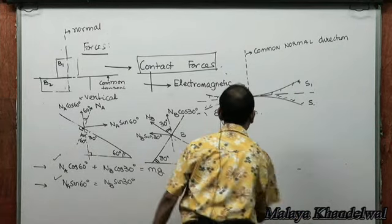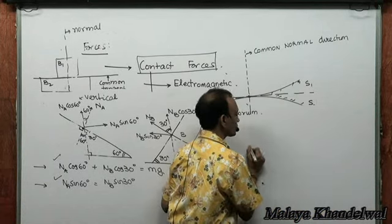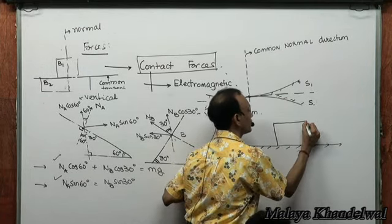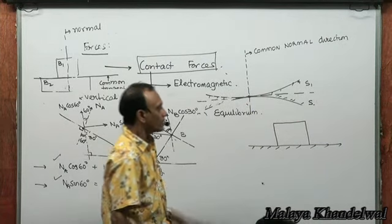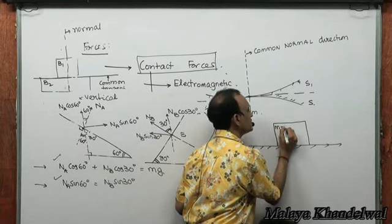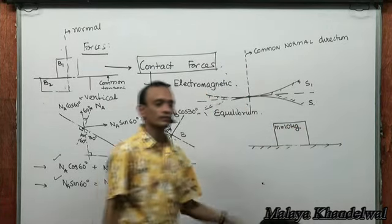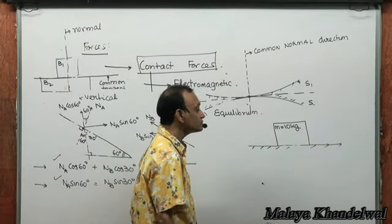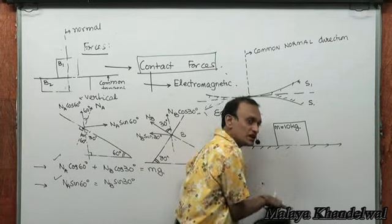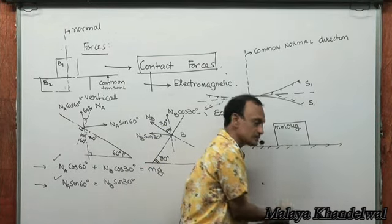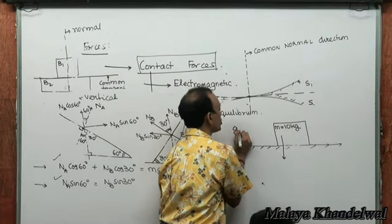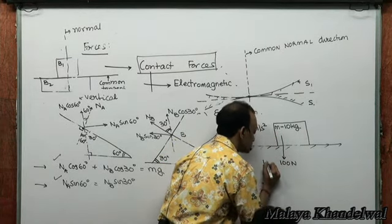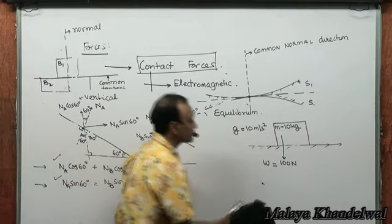Consider a simpler situation: a mass of 10 kg resting on a fixed horizontal ground. Mother Earth exerts weight downwards — MG equals 100 newtons (taking g = 10 m/s²). The ground exerts on the body a normal reaction R upwards, perpendicular to both surfaces.